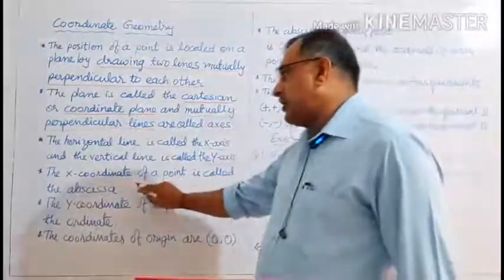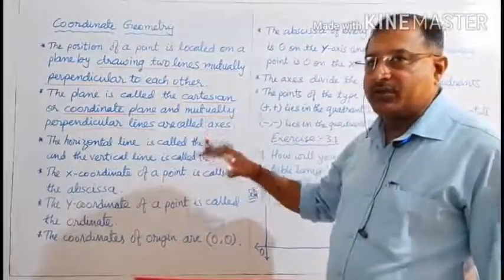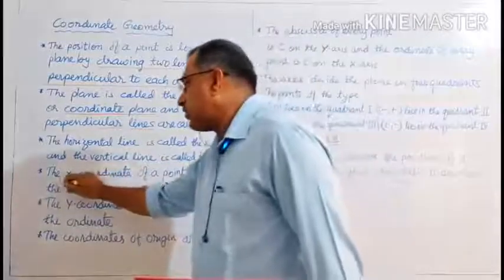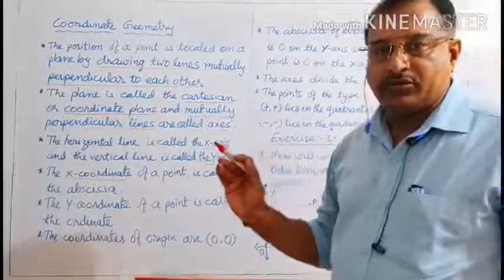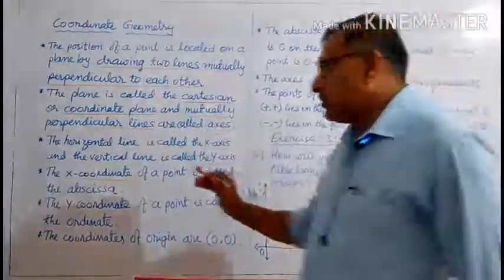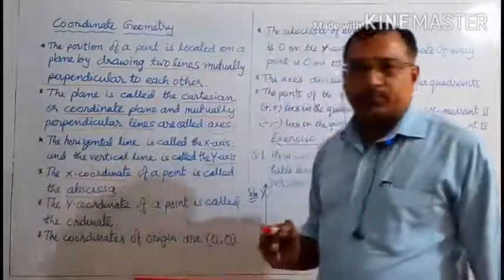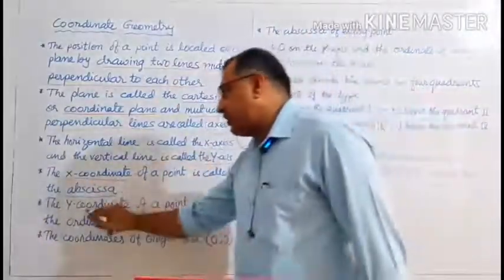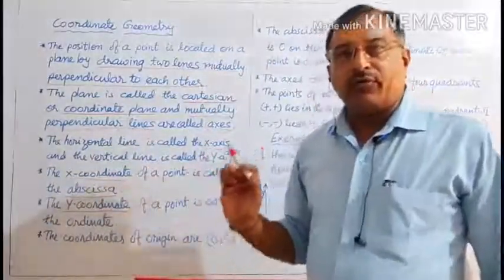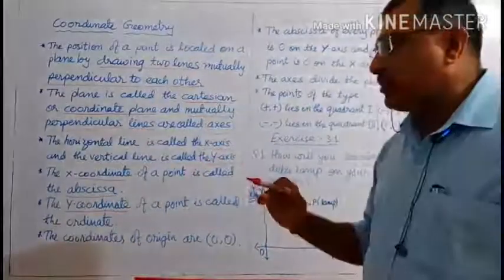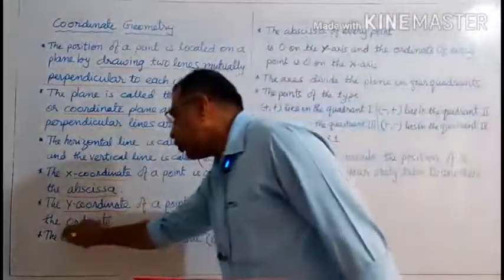The X coordinate of a point is the distance of that point from the Y axis — this is called the abscissa. The Y coordinate means the distance of a point from the X axis. At whatever distance the point P is from the X axis in the plane, that is called the Y coordinate.